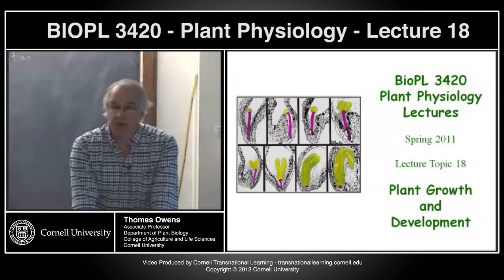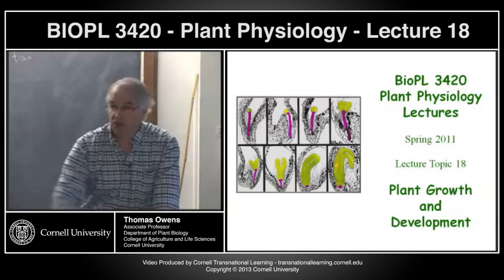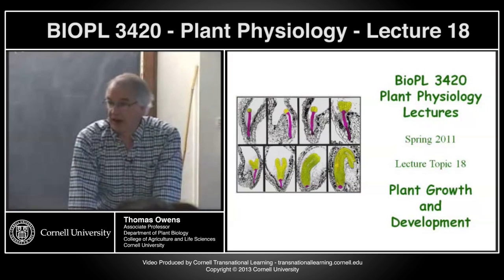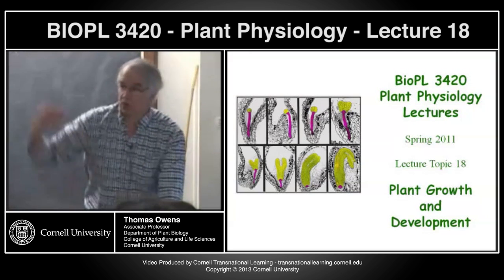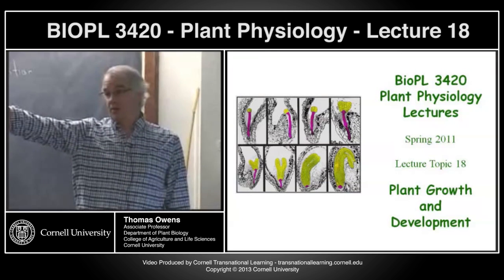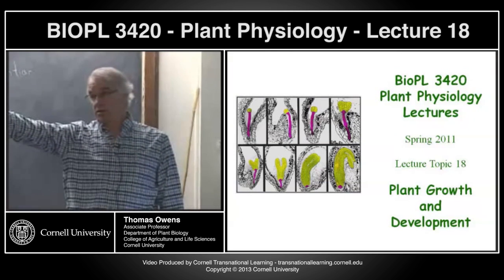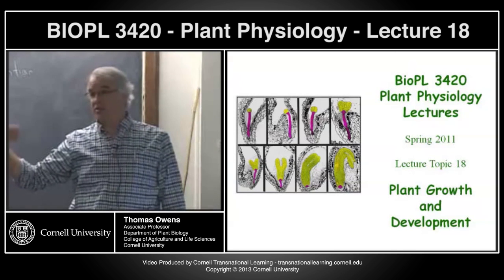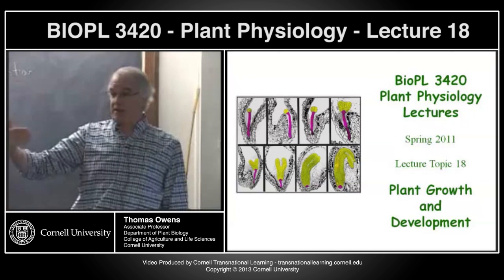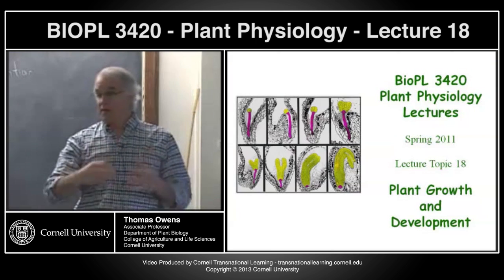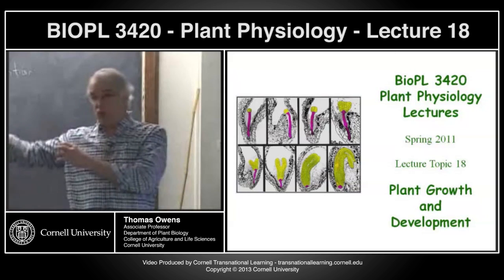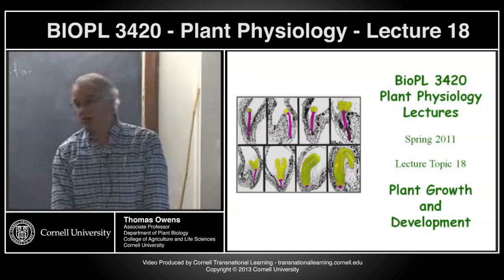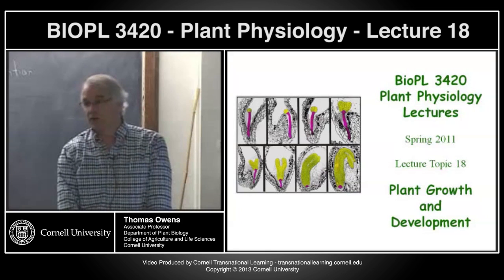If you think about the pericycle in the root — just inside the vascular cylinder — those cells, when they're mature, stop dividing. Towards the root tip, they're majorly involved in transport from the outer surface into the vascular bundle. But what happens if a lateral root forms at that point? That cell converts from a non-dividing cell involved in transport into a rapidly dividing cell that's part of the new root apical meristem. So that's a complete change in size, shape, function — all sorts of things. All of those things are possible.